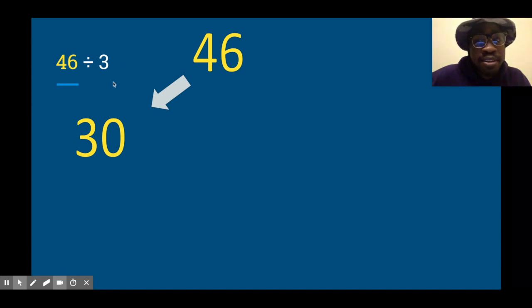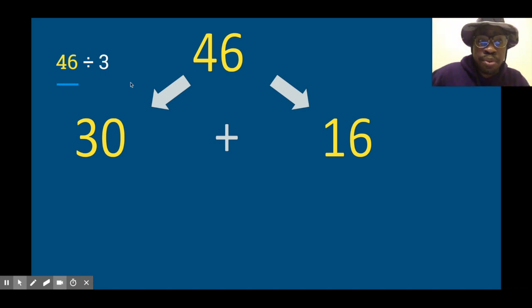But then I noticed that I have 16 left over, but I know my threes, and 16 is not a multiple of 3. So here's what I'm going to do. Instead of doing 16, I'm going to decompose that even further into 15 and 1. Now you might be thinking, what are we going to do with that 1? I put it in orange so we don't forget about it. We're going to work with that later. For right now, let's work with the 30 and the 15.